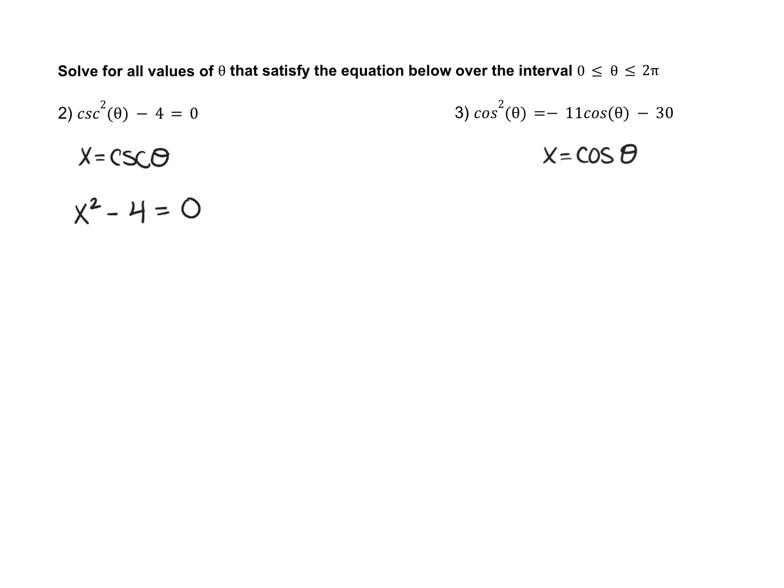Since in this first one x is cosecant, we're just going to make this x squared minus four equals zero. You should know that this is a difference of squares factoring. So this is x plus 2, x minus 2. When we do a t-chart, we get x equals negative 2, and x equals positive 2.